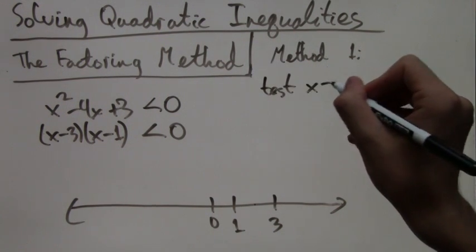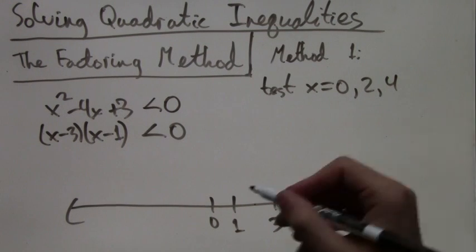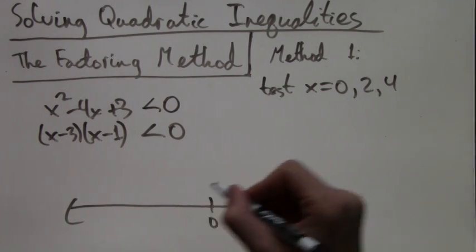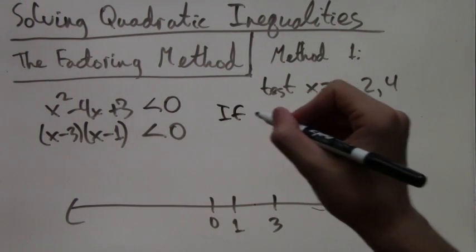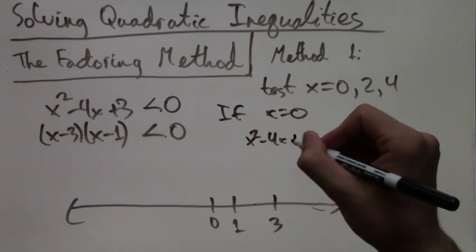We test points that are on the left of the roots, between the roots, and to the right of the roots. These three segments each have their own sign. They're either positive or negative. To find out, we just test.